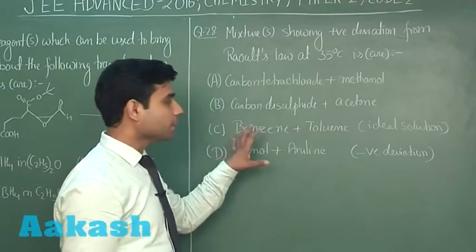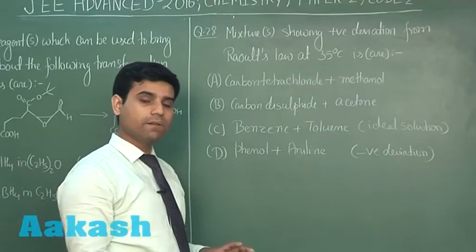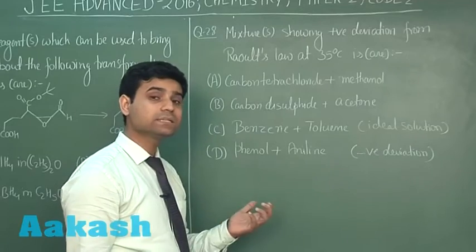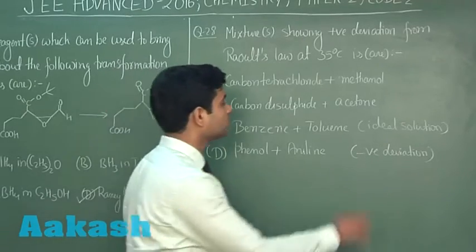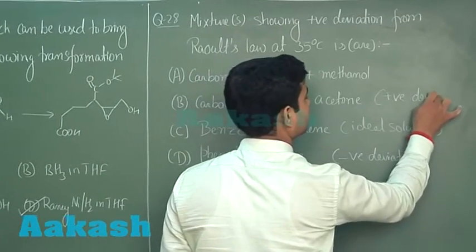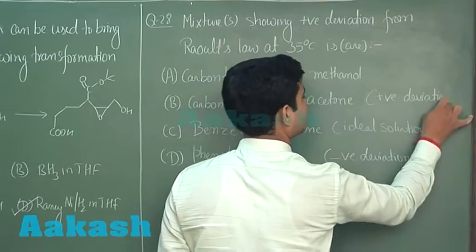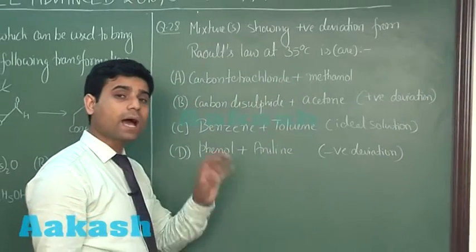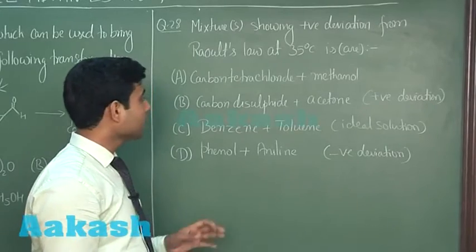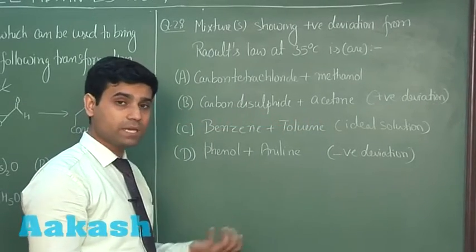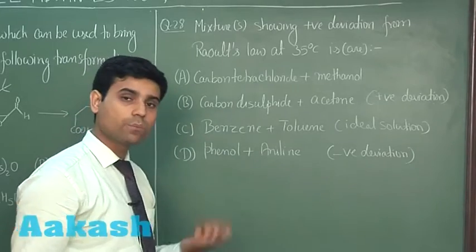If I talk about carbon disulfide and acetone, they will form weaker forces of attraction after mixing. Hence, they will show positive deviation from Raoult's law. Similarly, if I have methanol in which we have hydrogen bonding and we are adding carbon tetrachloride, the new forces of attraction will be weaker. Hence, this will also show positive deviation.